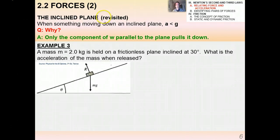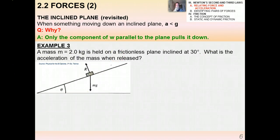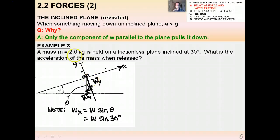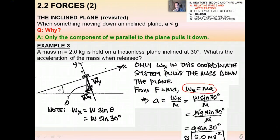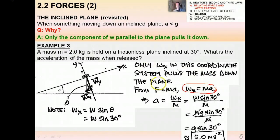Back to the inclined plane: when something moves down an inclined plane, its acceleration is less than g because only the component of weight parallel to the plane pulls it down. For example, a mass of 2 kilograms on a frictionless plane — what's the acceleration when released? Using a tilted coordinate system, wx = w·sin30 is the component pulling the mass down. From F = ma using wx explicitly as the net force, the mass moves down at 5 m/s² — about half of free-fall acceleration, which makes intuitive sense.